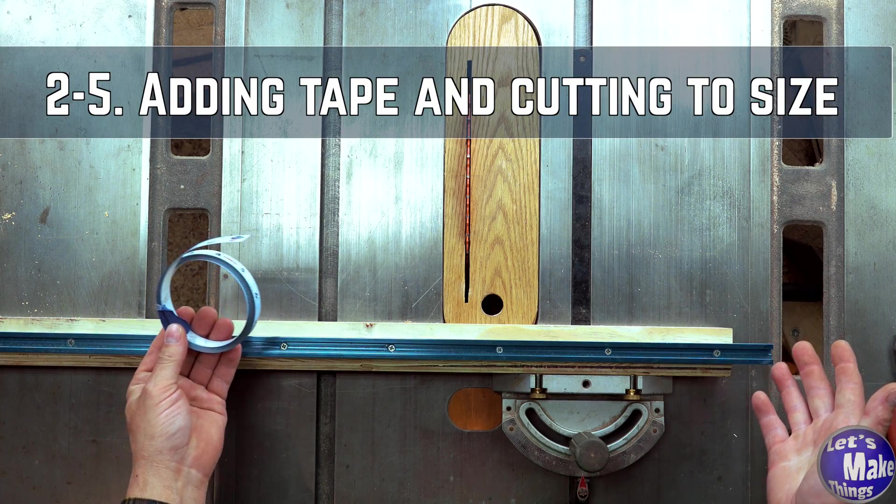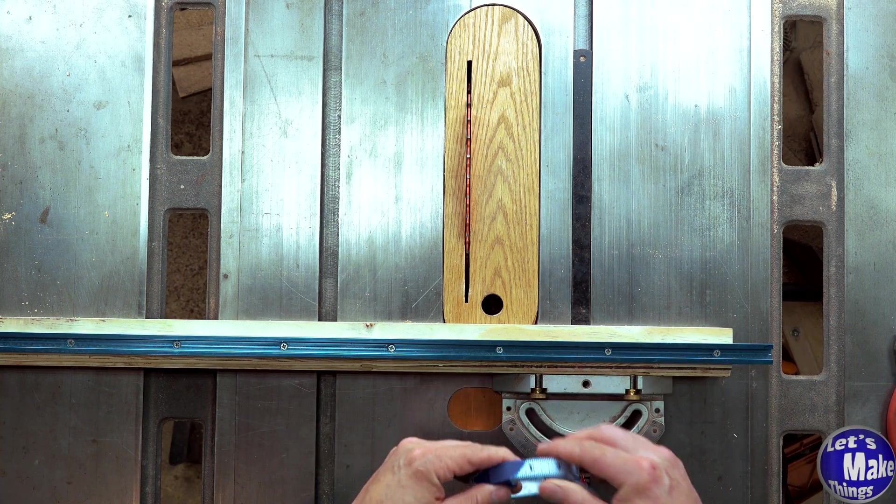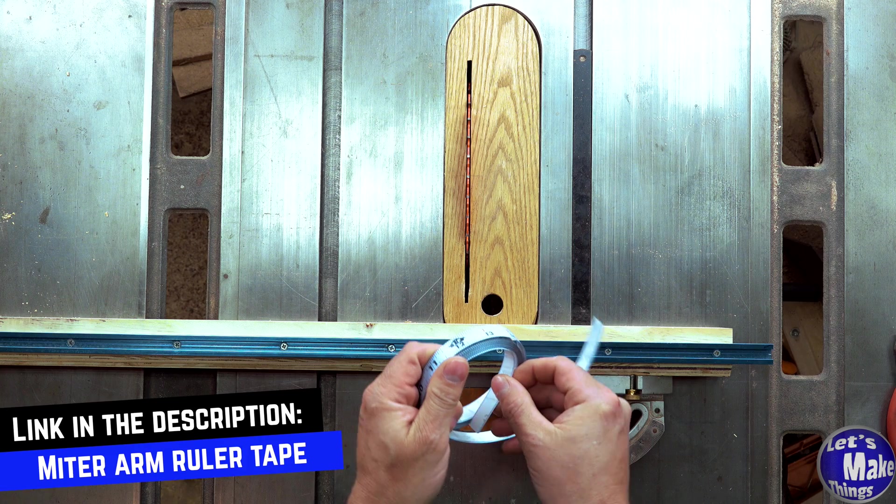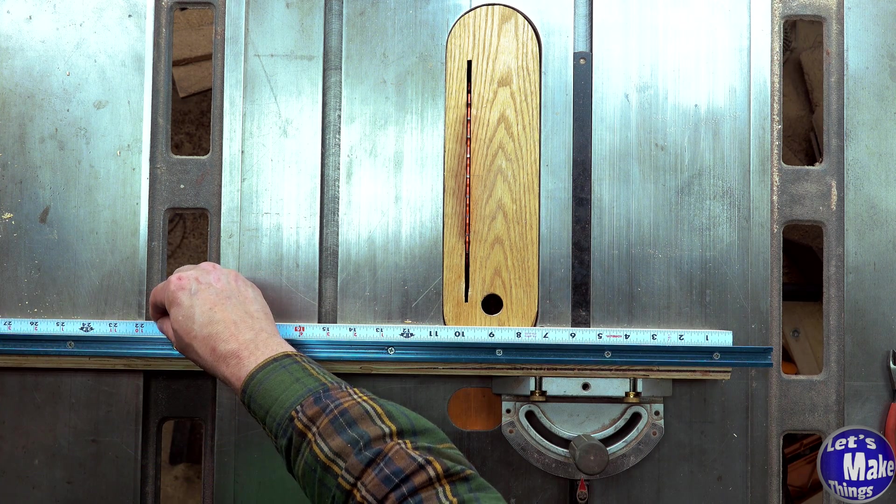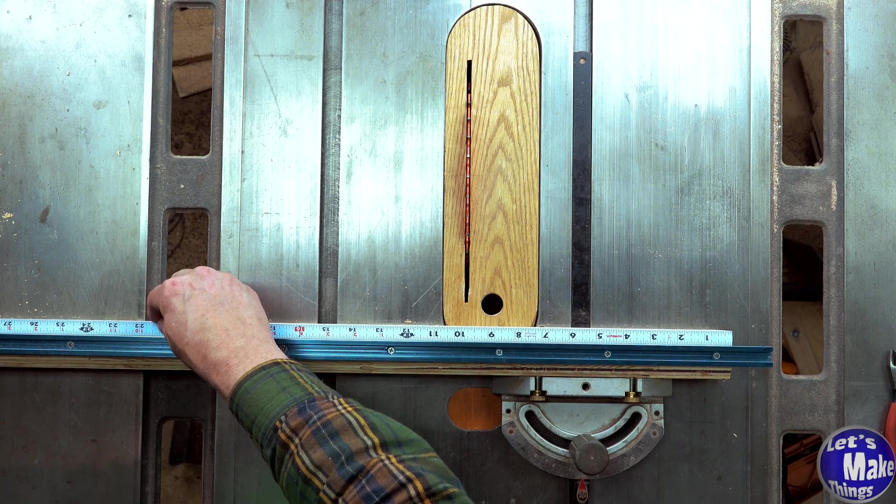And finally, you can't have a stop block without having some kind of measuring tape. I'll have a link for this as well in the description. It'll also be on the website. What I need to do is set this on here and then pull the tape off the back and then it's done.